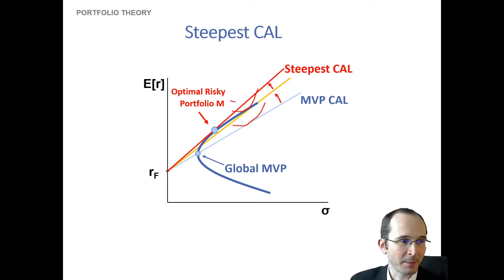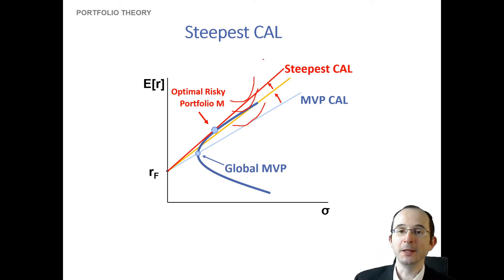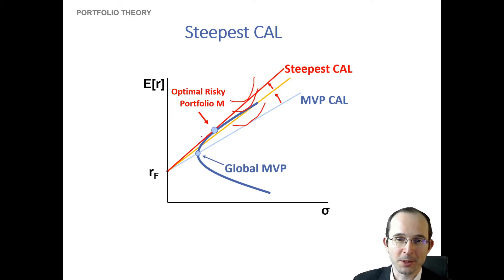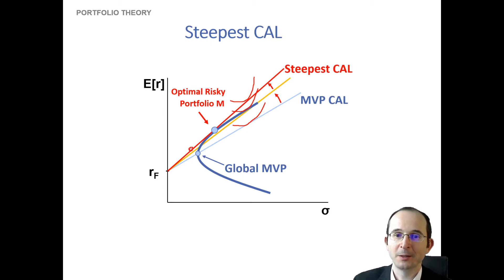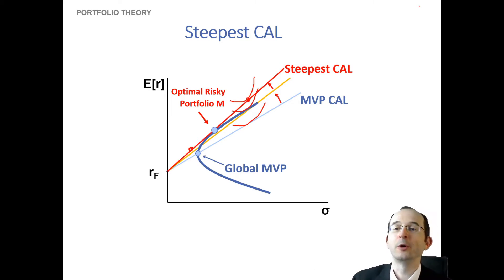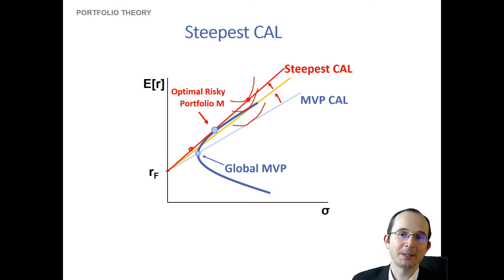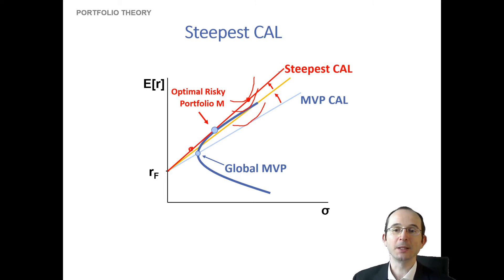This optimal risky portfolio has the steepest capital allocation line, letting us reach the highest possible indifference curve. It's the risky portfolio that everybody would want to hold in some proportion — it just depends on their particular utility function whether they would be partially invested in the risk-free asset or borrowing at the risk-free rate to hold more of the risky portfolio. Maximizing the slope of the CAL is therefore equivalent to maximizing the Sharpe ratio and therefore utility.